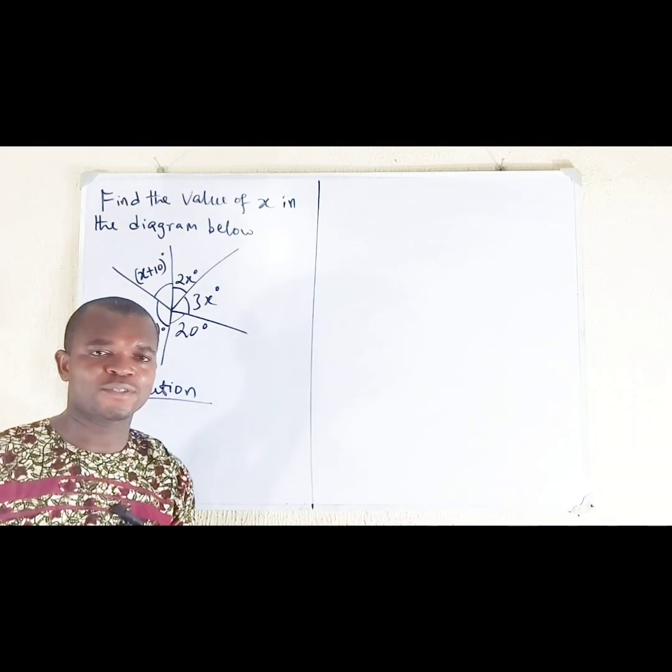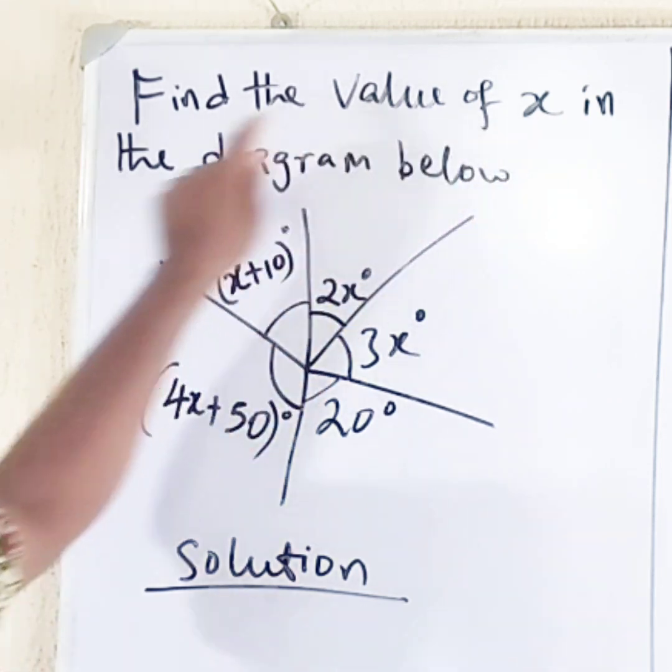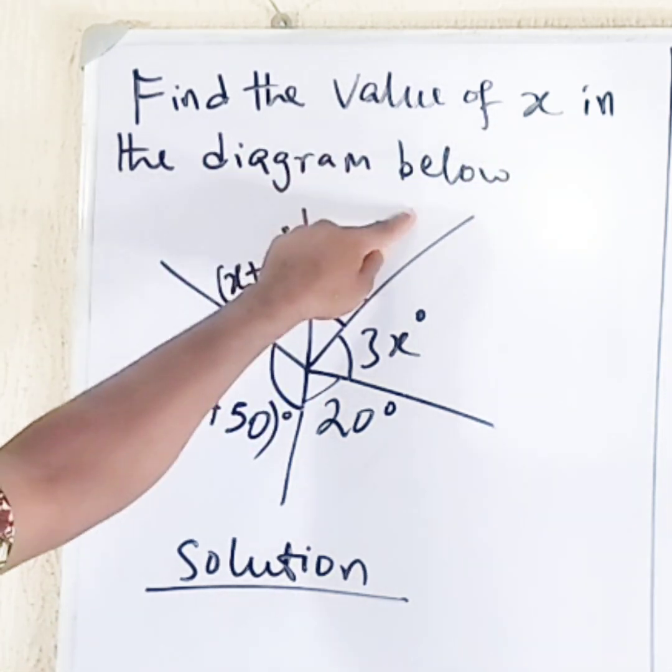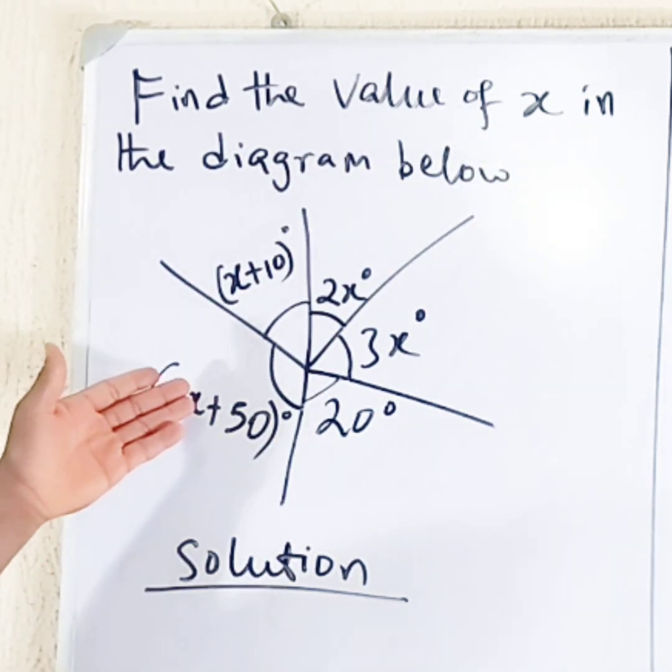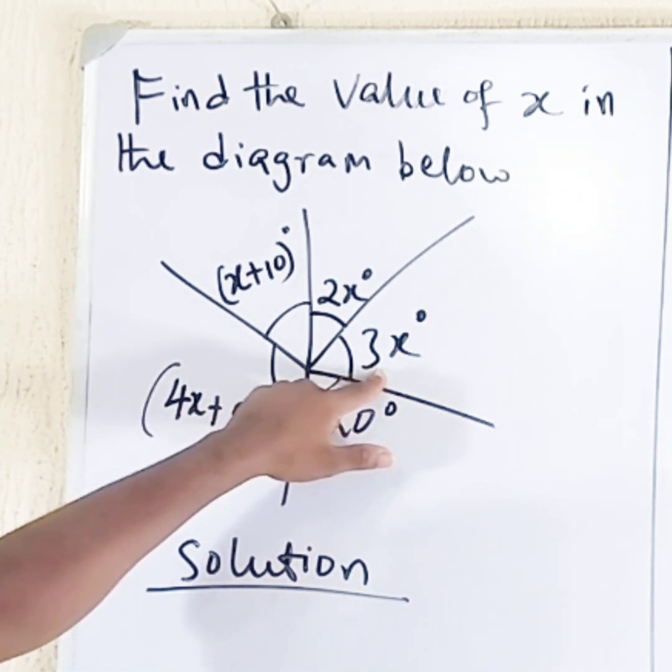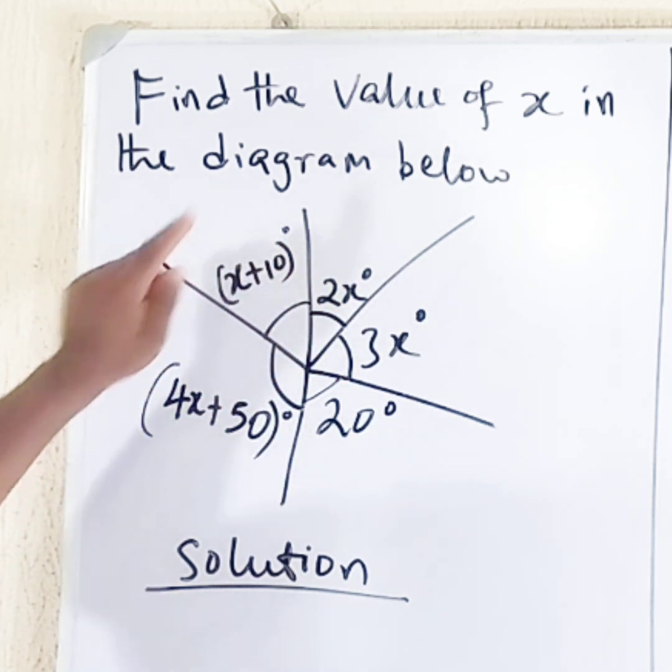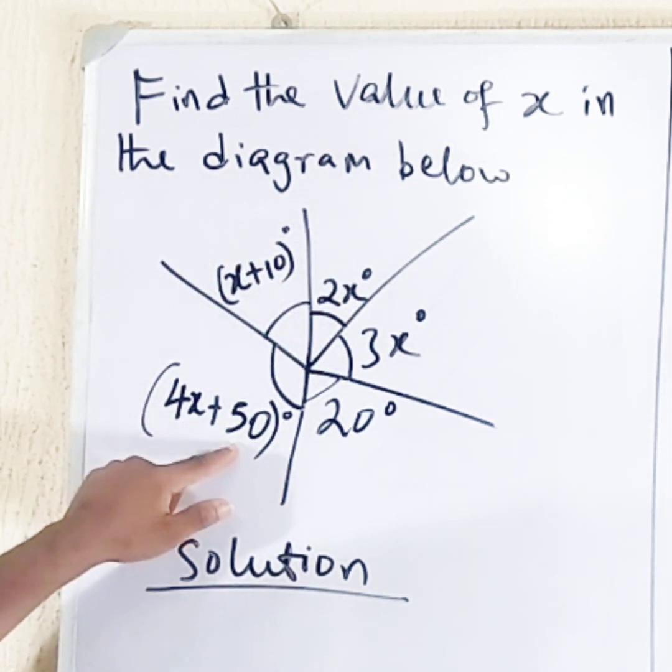Hello guys, let us solve this problem: find the value of x in the diagram below. Look at the diagram, we have 20 degrees, 3x degrees, 2x degrees, x plus 10 degrees, and 4x plus 50 degrees.